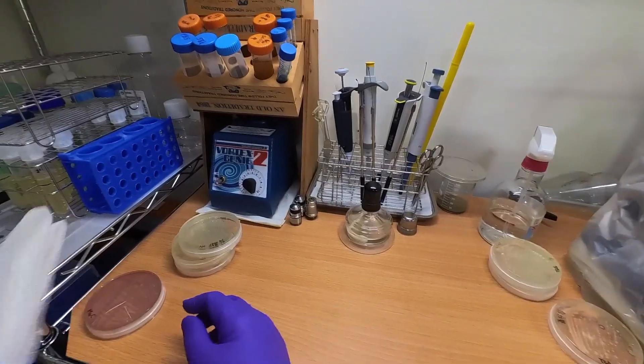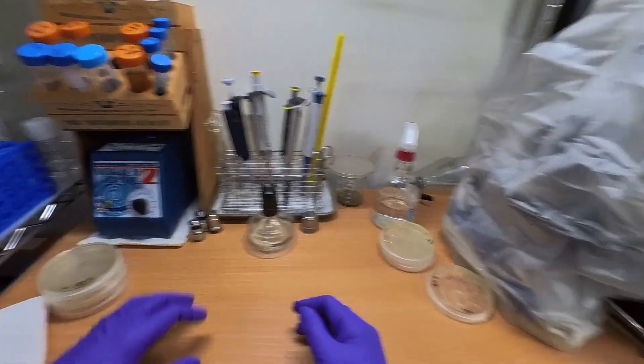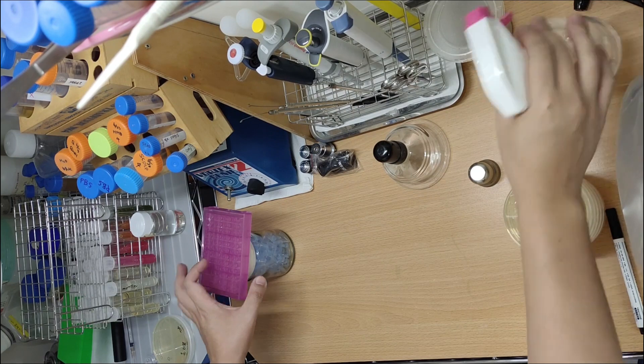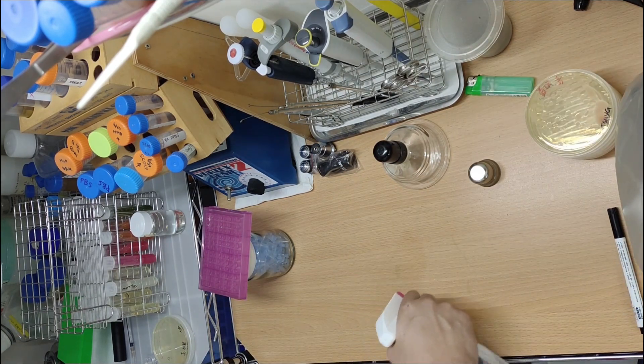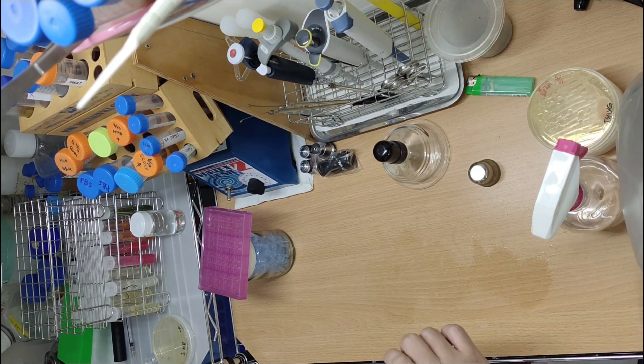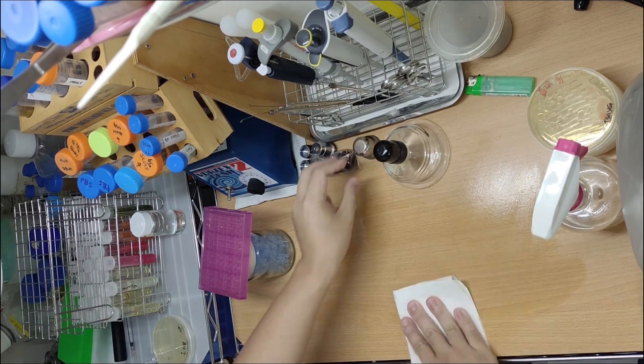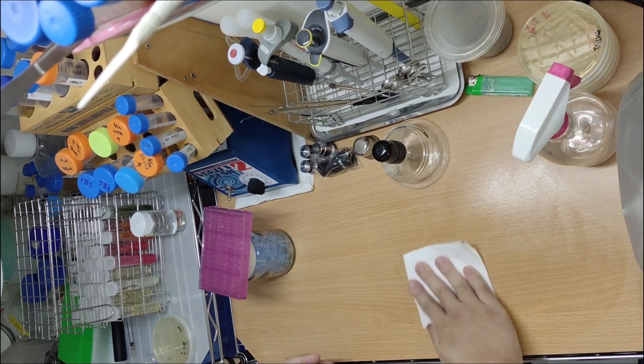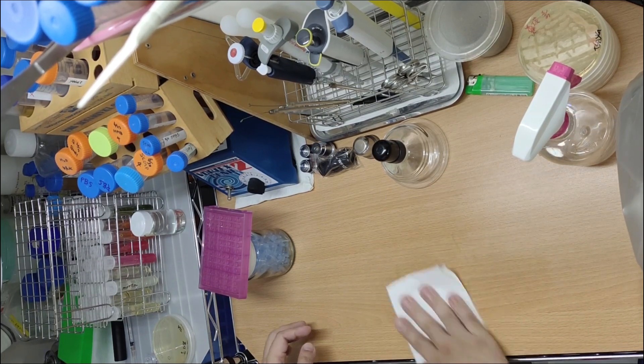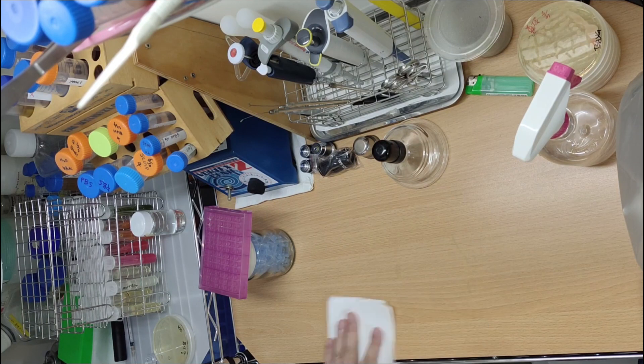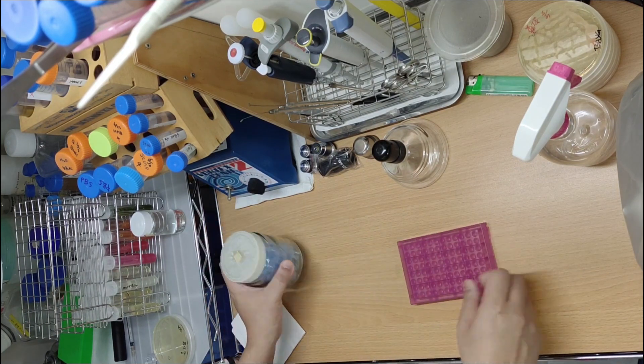For example, I test whether the bacteria can ferment sugar by acid production. The sugars I use in the test are just glucose, lactose, and sucrose. But there are more than 40 different sugar types and more than 90 different carbon sources that you can test with. So there's just not enough information from those tests I did to let me or anybody else identify those bacteria correctly.